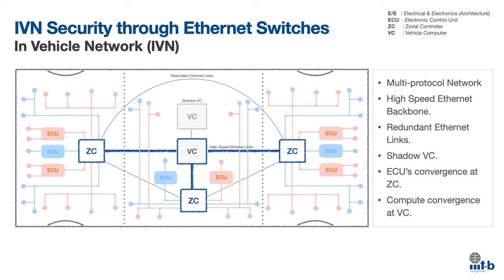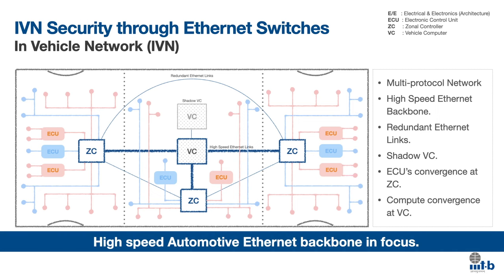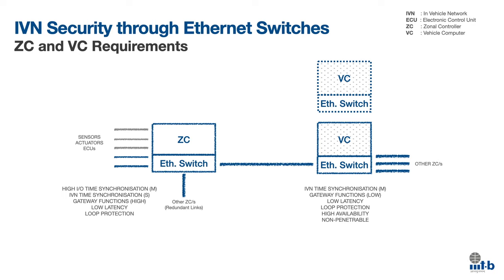Highlights of the depiction here are a multi-protocol network depicted in different colors in the vehicular network. The high-speed Ethernet backbone can be seen between the ZCs and VCs — that is zonal controllers and vehicle computers. Redundant Ethernet links, for example between the ZCs via VC and direct links as well. Shadow VC is a replication strategy to ensure fail-safe operations in certain cases. ECU convergence is seen in major at zonal controllers, and compute convergence is at the vehicle computer. This is how a typical but simplified IVN setting would look.